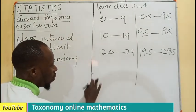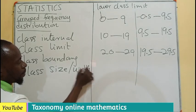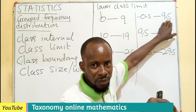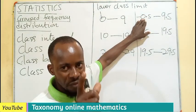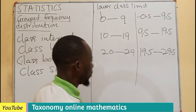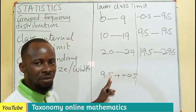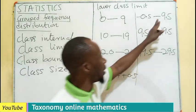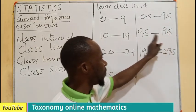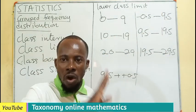With the class boundary established, we can use it to find what is called the class size, also known as class width in some places. The class size is the difference between the upper class boundary and the lower class boundary of the same class. So 9.5 minus negative 0.5 gives 10, meaning the class size is 10. For the next class, 19.5 minus 9.5 also gives 10 — the class size is the same across all classes.